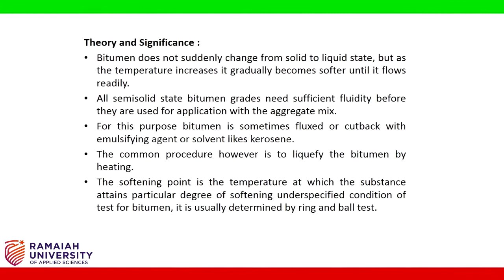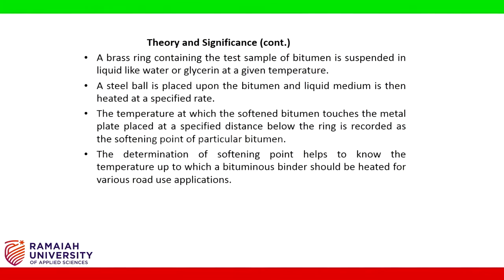The softening point is the temperature at which the substance attains a particular degree of softening under specified conditions of test. For bitumen, it is usually determined by the ring and ball test. A brass ring containing the test sample of bitumen is suspended in a liquid like water or glycerin at a given temperature. A steel ball is placed upon the bitumen and the liquid medium is then heated at a specified rate.